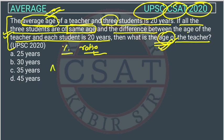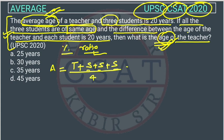Applying the average formula for the teacher plus 3 students — there are 4 people in total. Since all 3 students are of the same age, we write T plus 3S equals 80, because 20 multiplied by 4 equals 80.